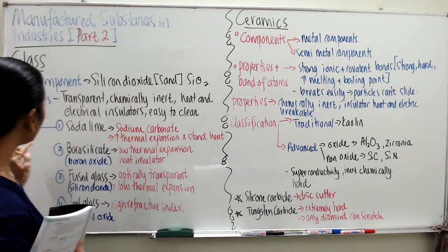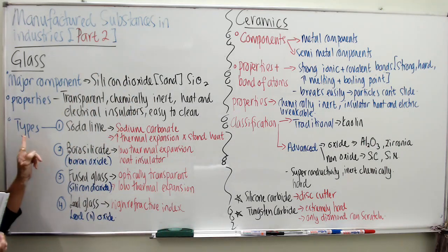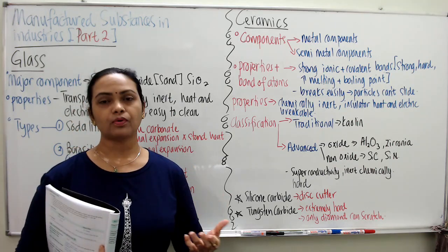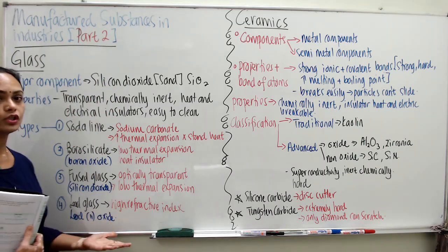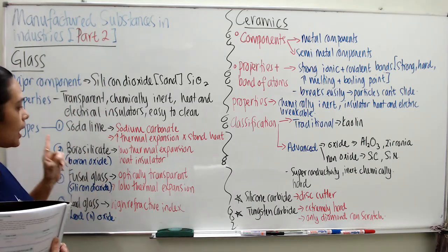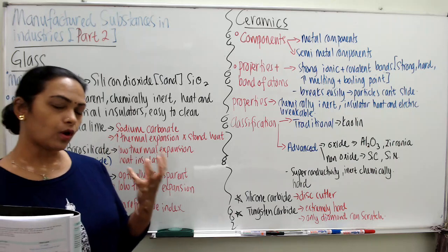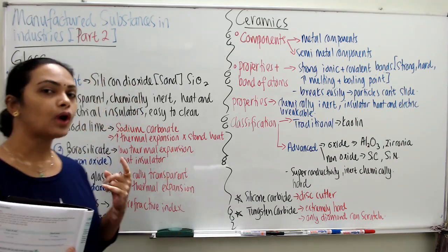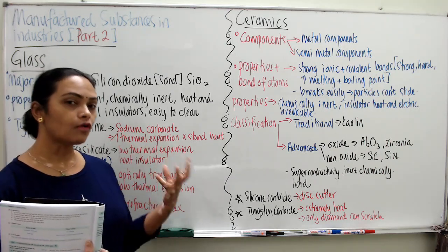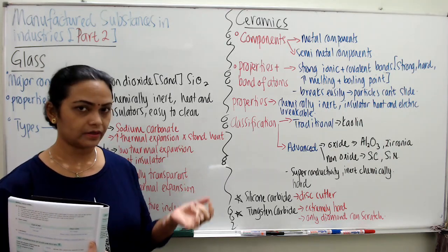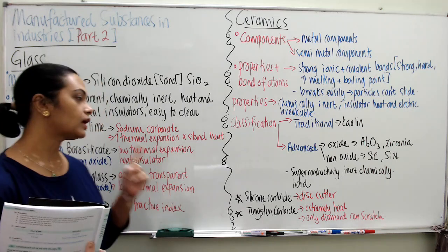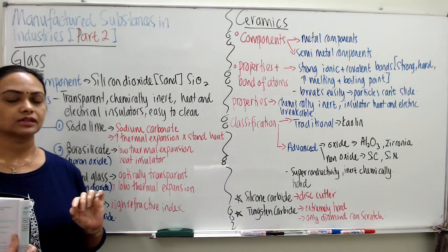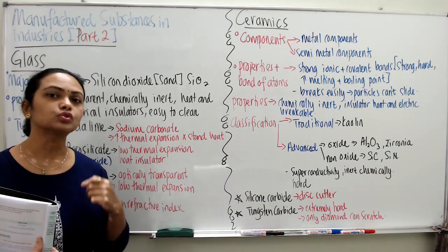Now let's look at the types of glass. These are the four types of glass discussed in your syllabus. The name of each type of glass totally depends on the main substance that contributes to the name.